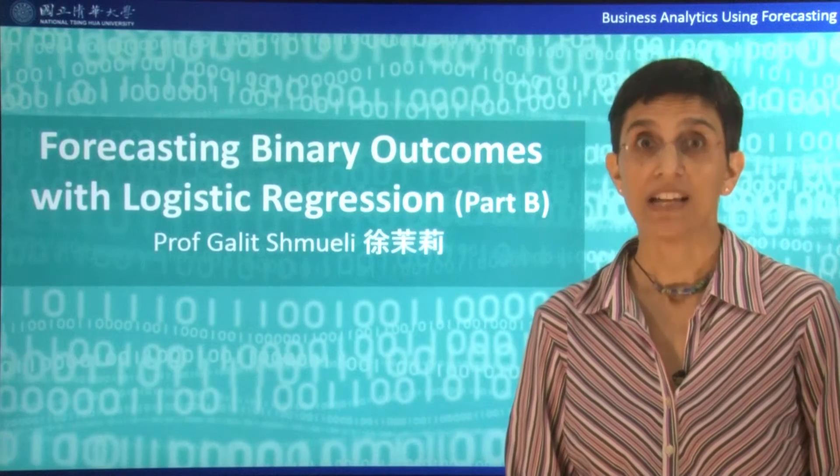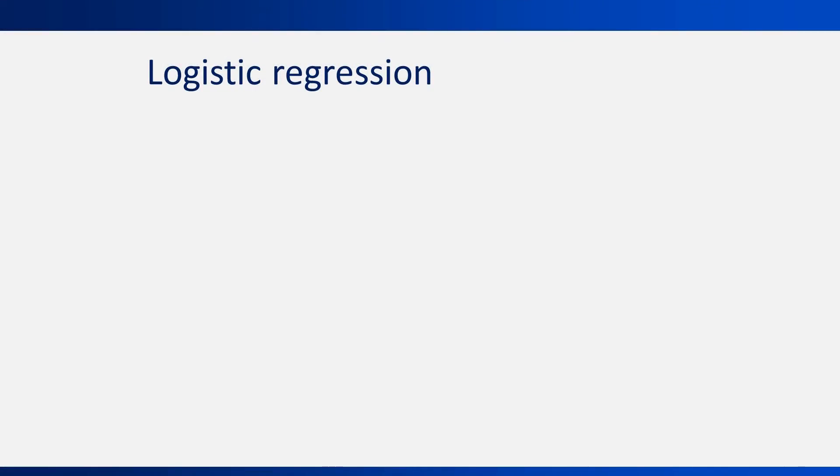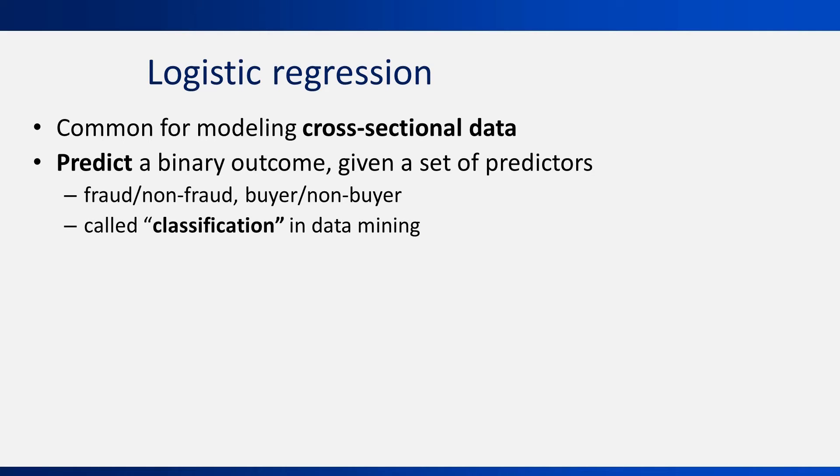That's where logistic regression comes in. Logistic regression, like linear regression, was designed for modeling cross-sectional data, not time series. It's designed for predicting a binary outcome given a set of predictors. The predictors can be numerical, dummies, or both, just like in linear regression.